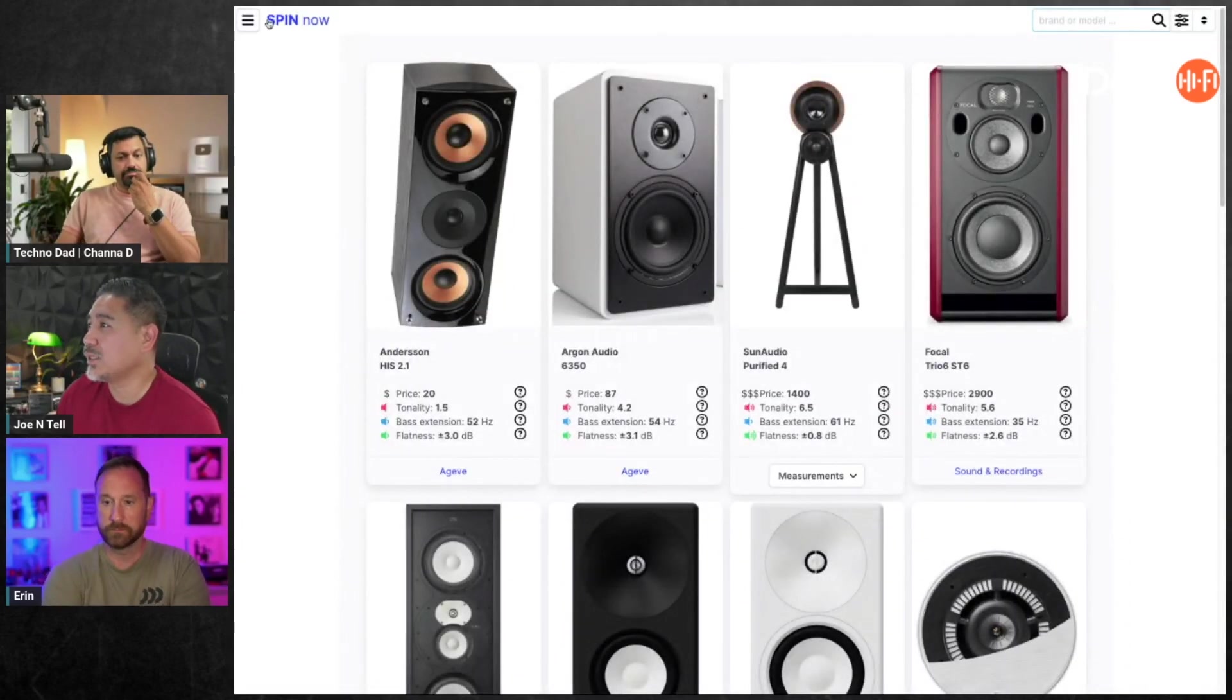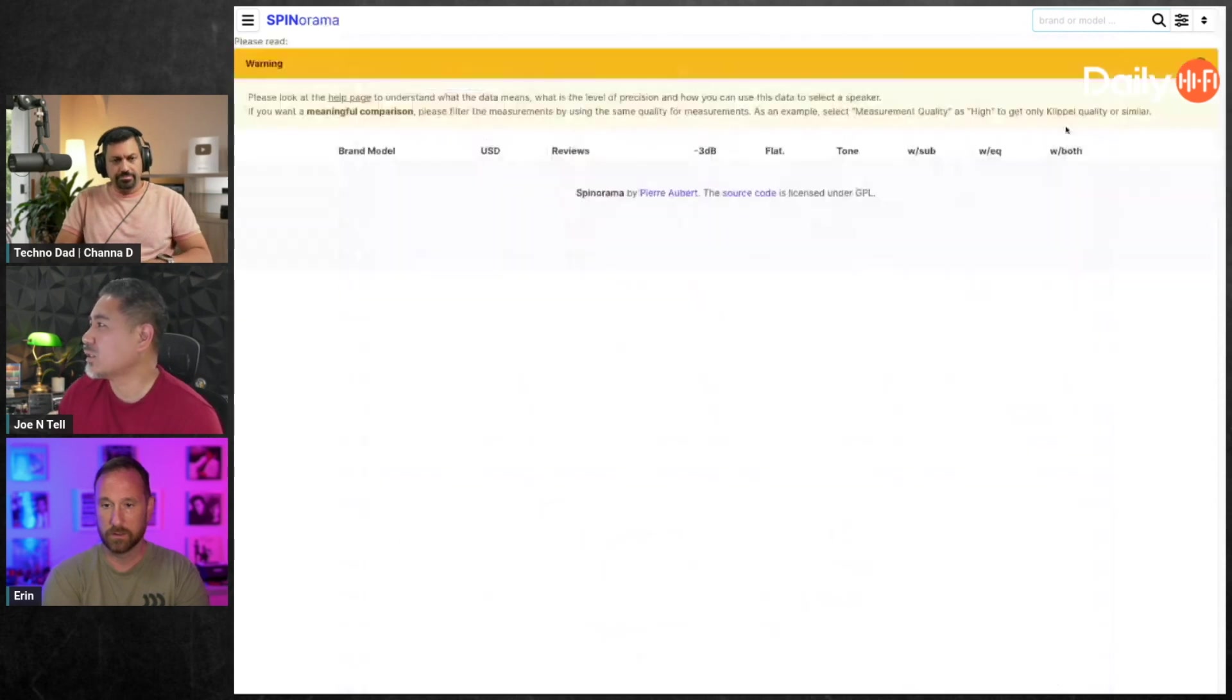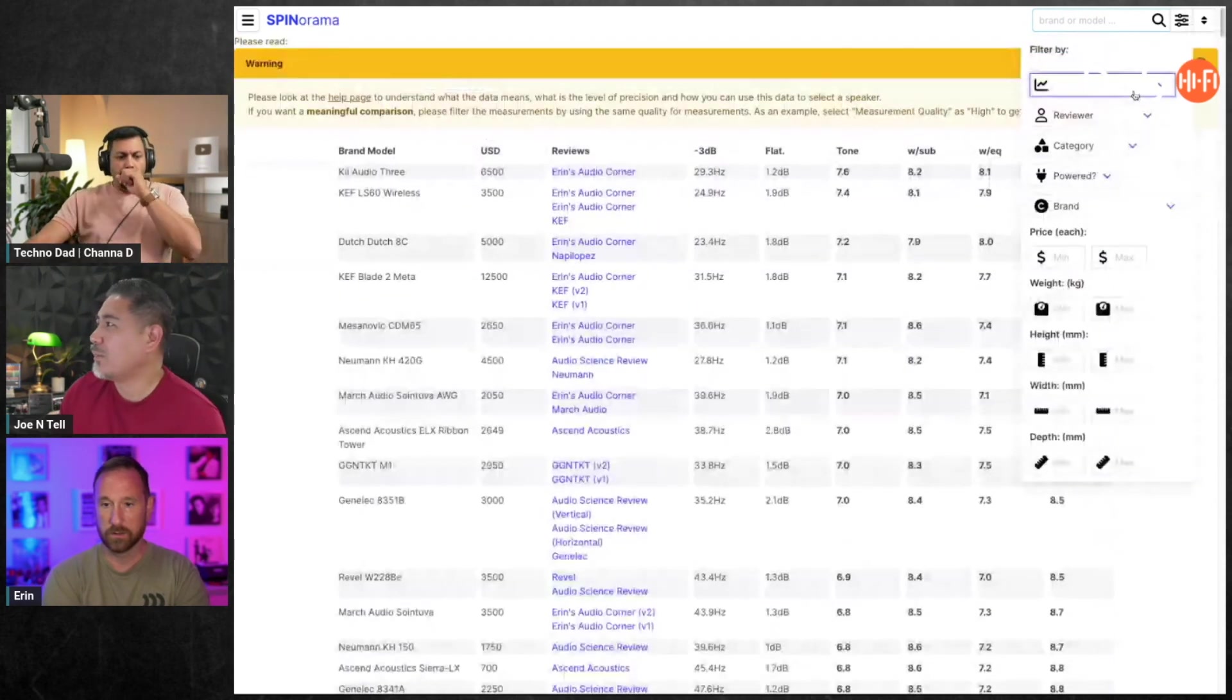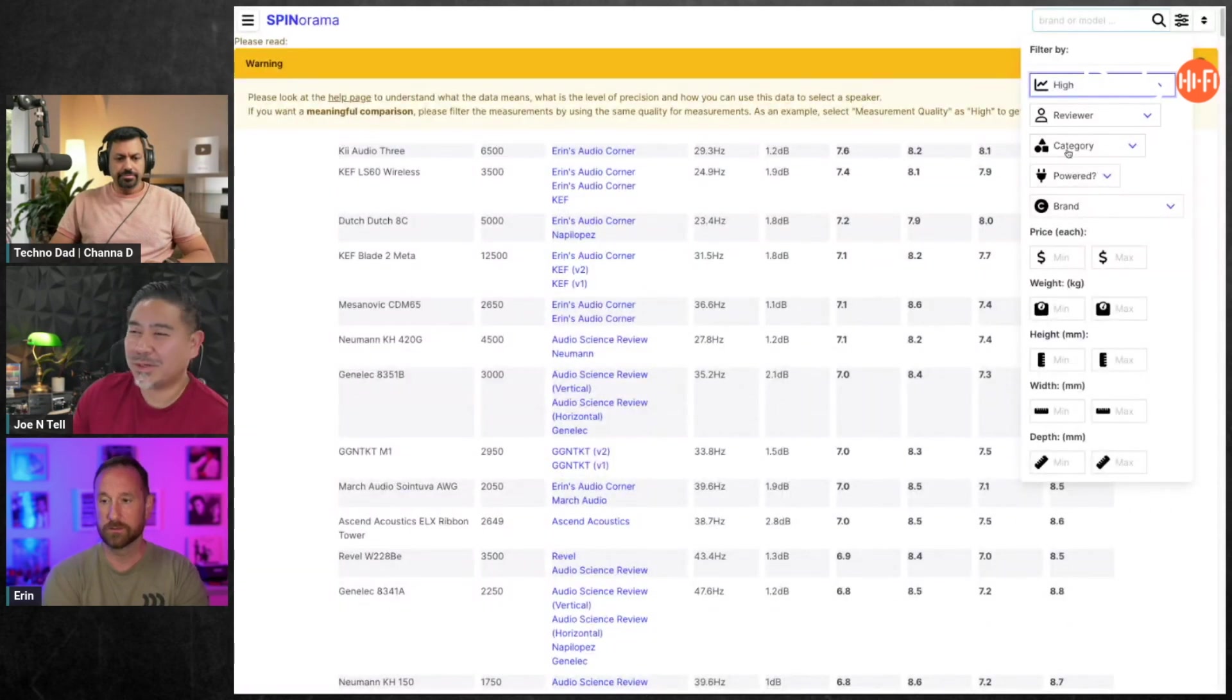And then if I go to, let's say, ranking, I can sort this by measurement quality. If I put high, then it's only pretty much like yours and Amir's and whatever's been done on a Klippel or anechoic.